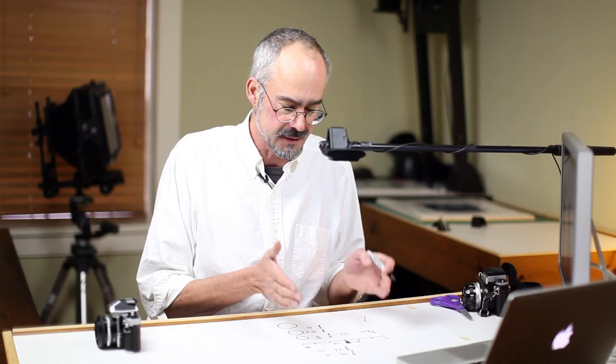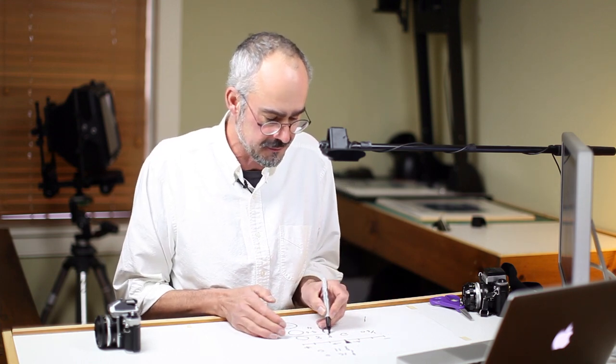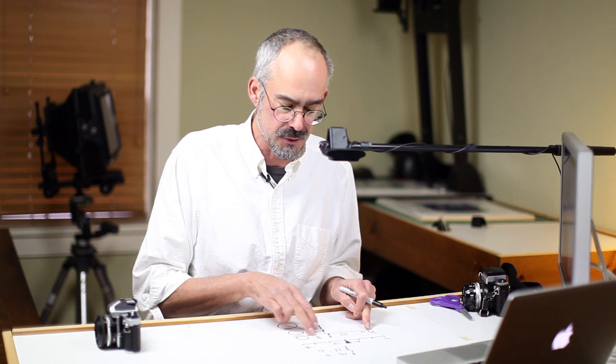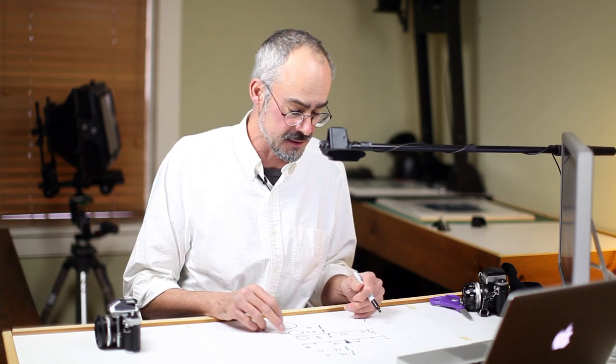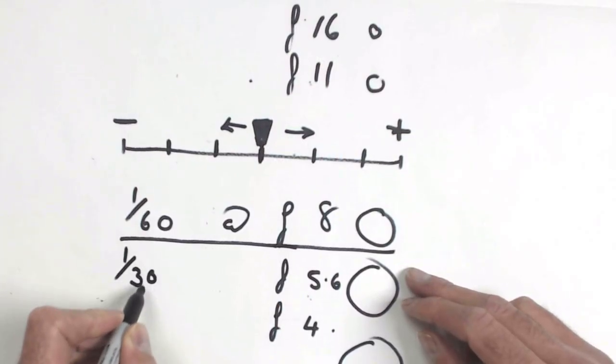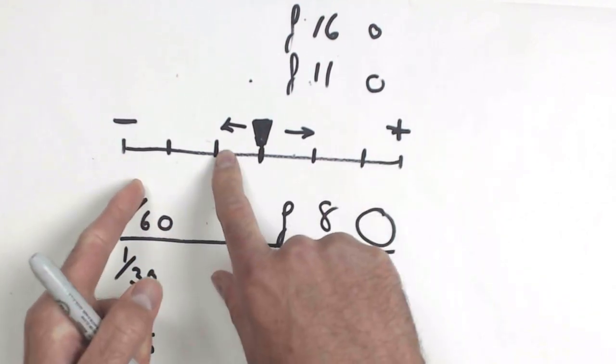Once you've done that, you can go back to f8. If that's still, if the lighting hasn't changed, if that's still the correct exposure, one sixtieth of f8, and do the same thing with the shutter speeds. Set one shutter speed longer, one thirtieth of a second. Another shutter speed longer, one fifteenth of a second, and see which way the slider goes.